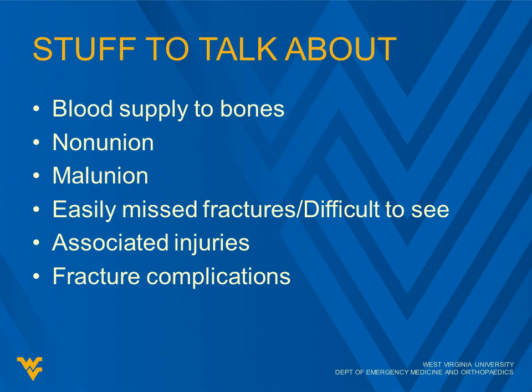For this mini lecture, we're going to be talking about the blood supply to bones, some non-union and malunion issues, some easily missed fractures or difficult-to-see areas, and some tricks for that. Also associated injuries, which you need to be thinking about when one thing happens and what the other injury might be, and fracture complications.